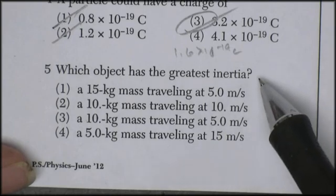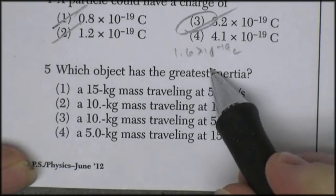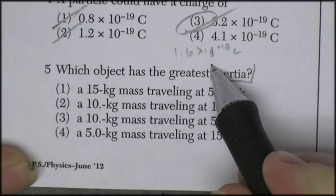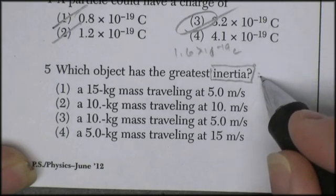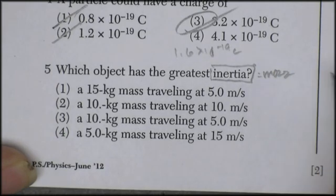Question five. Which object has the greatest inertia? Again, this is a vocabulary question. Inertia is mass. Mass is inertia. So the question is, which of these has the greatest mass?